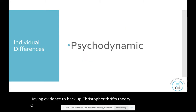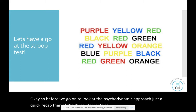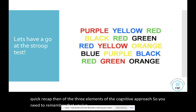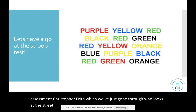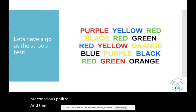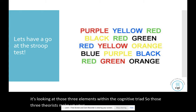Before moving on to the psychodynamic approach, a quick recap of the three elements of the cognitive approach: Anthony Morrison covers positive symptoms with sleep deprivation and inappropriate assessment; Christopher Thrift looks at the Stroop test and the pre-conscious filter; and Aaron Beck with the cognitive triad looks at the negative symptoms. Those three theorists make up your cognitive explanation of schizophrenia.